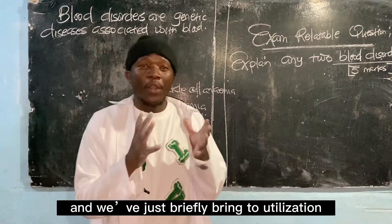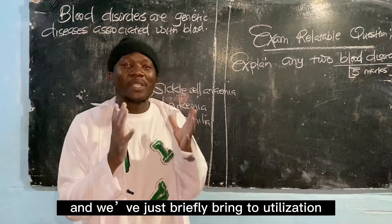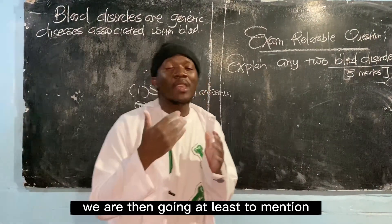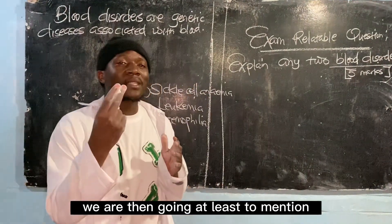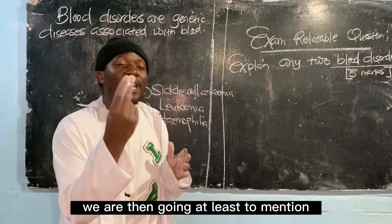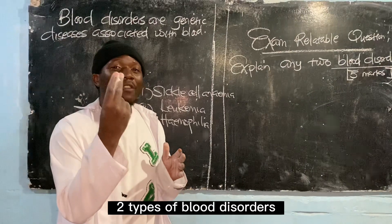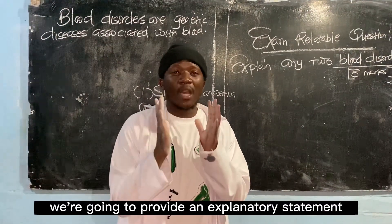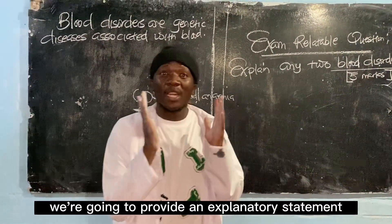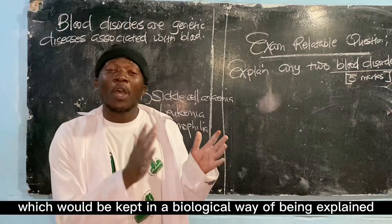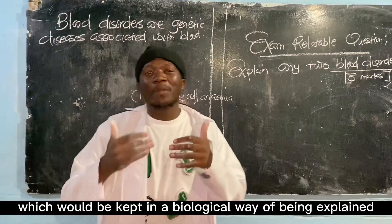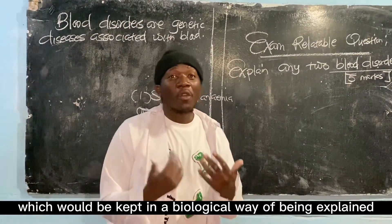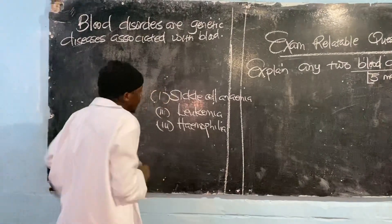Since the question has five marks, we need to briefly define the keywords, then mention at least two types of blood disorders, and for each provide an explanatory statement backed up in a biological way of being explained.